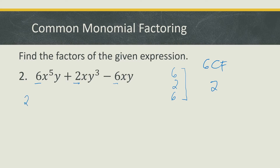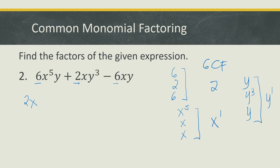Next, get the common factor of the variable x. We have x to the 5th, x, and x in each term. The smallest exponent is 1, so the common factor is x. For the second variable y, we have y, y cubed, and y. The smallest exponent is 1, so the common factor is y. Our common monomial factor is therefore 2xy.